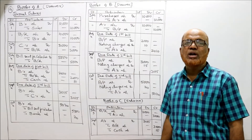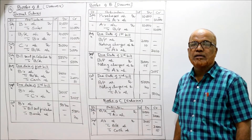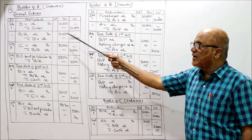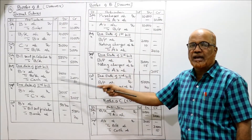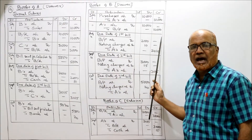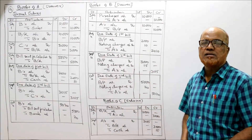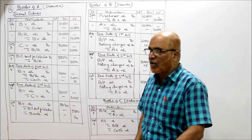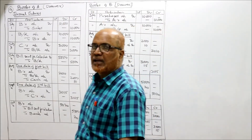These are the entries in the books of A, B, and C. This is the end of problem number nine.